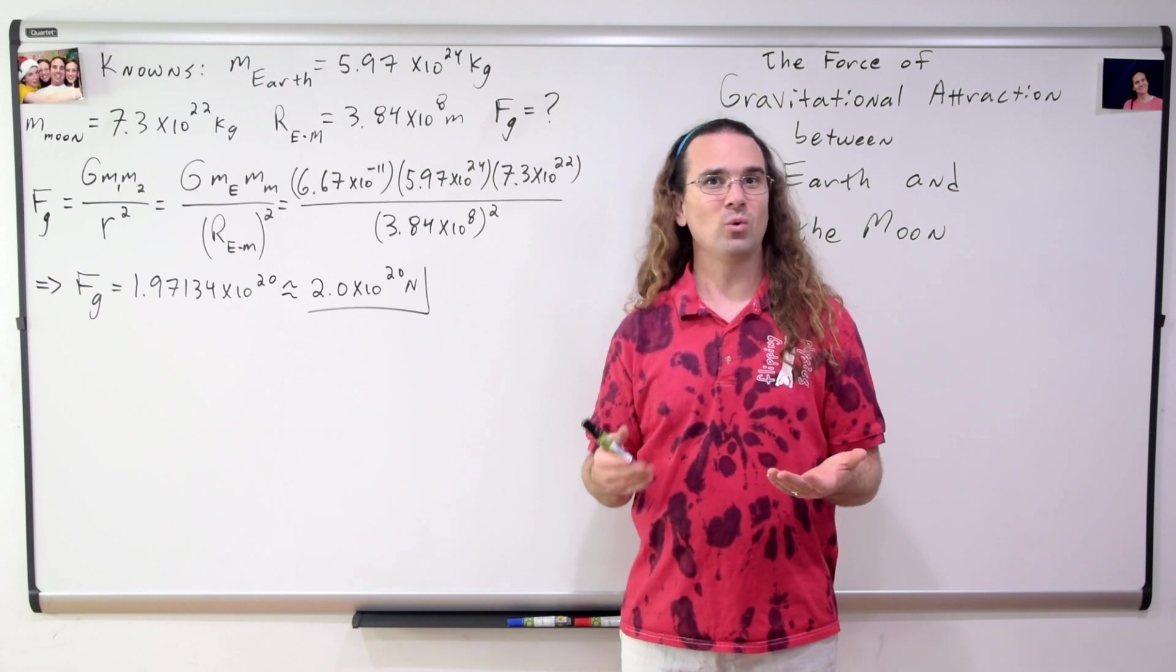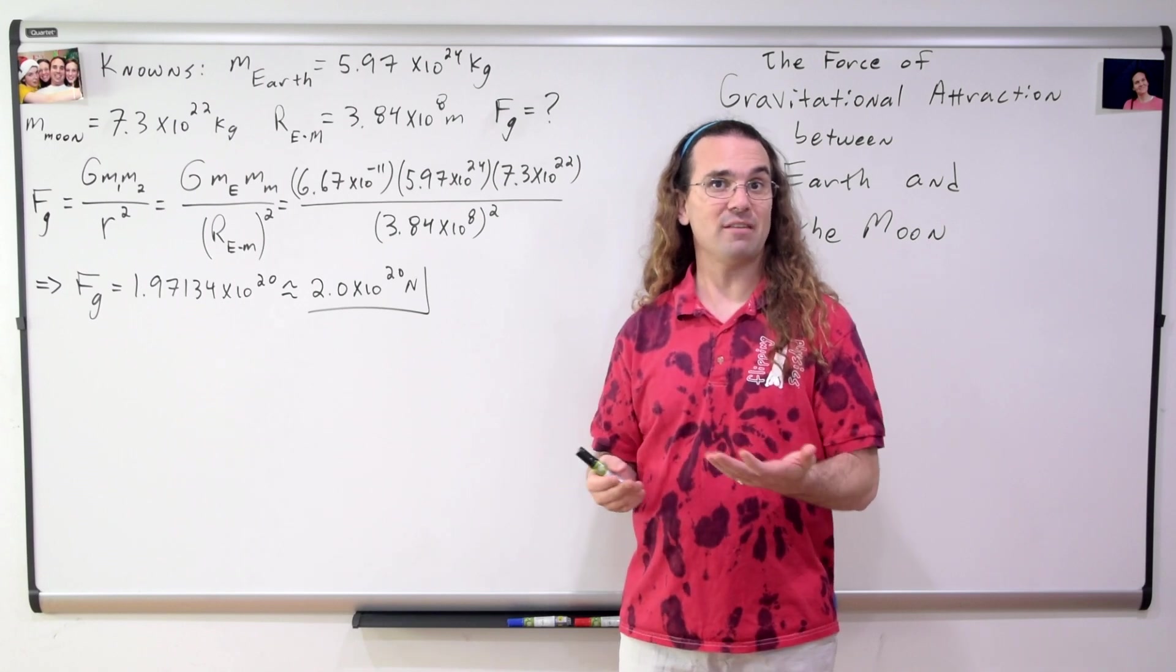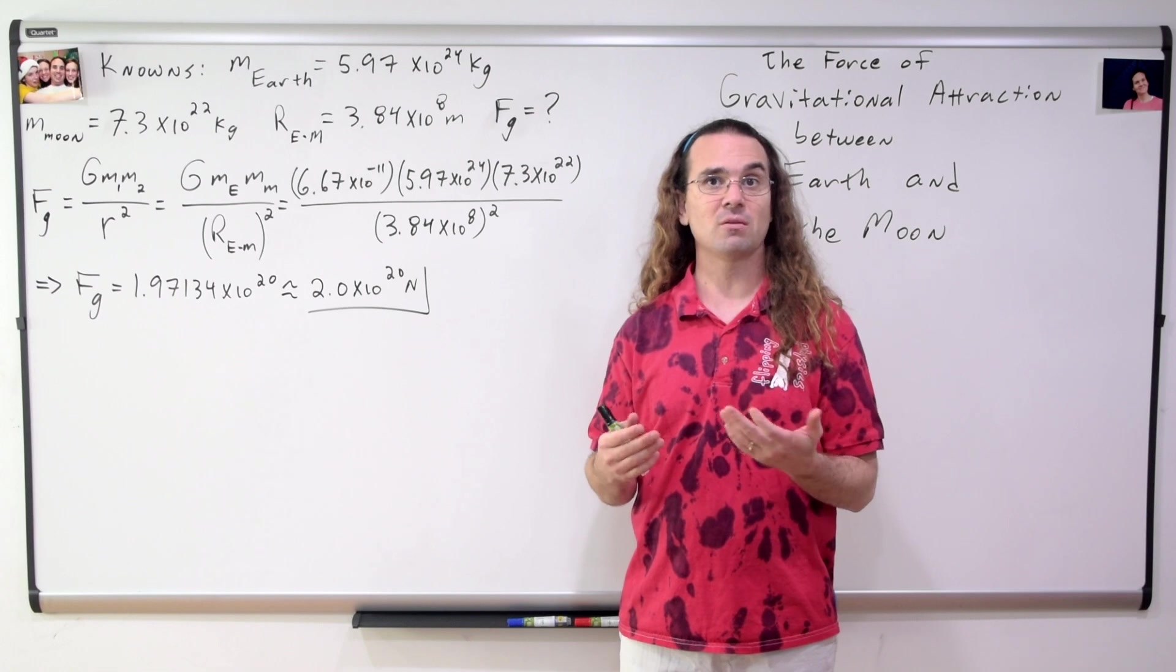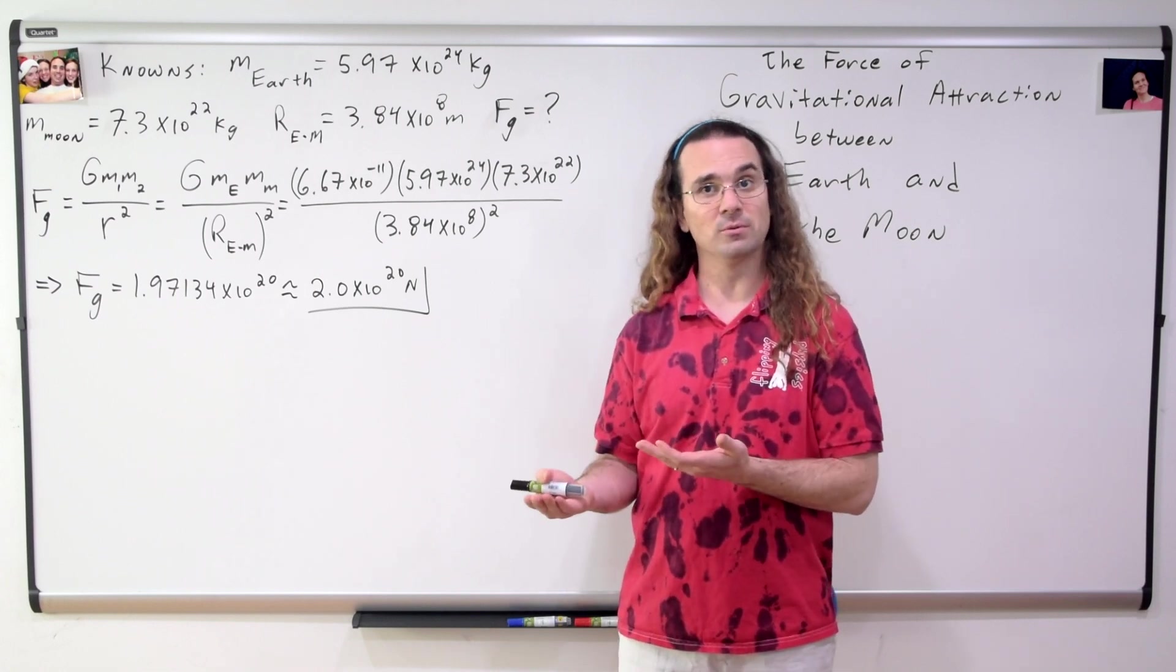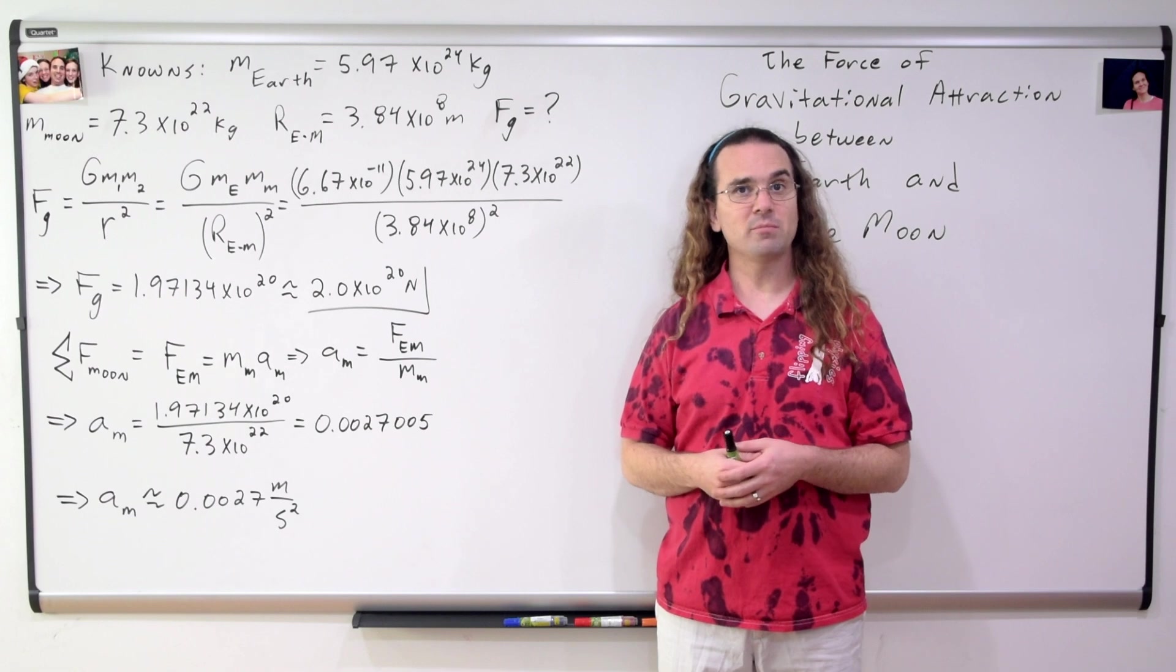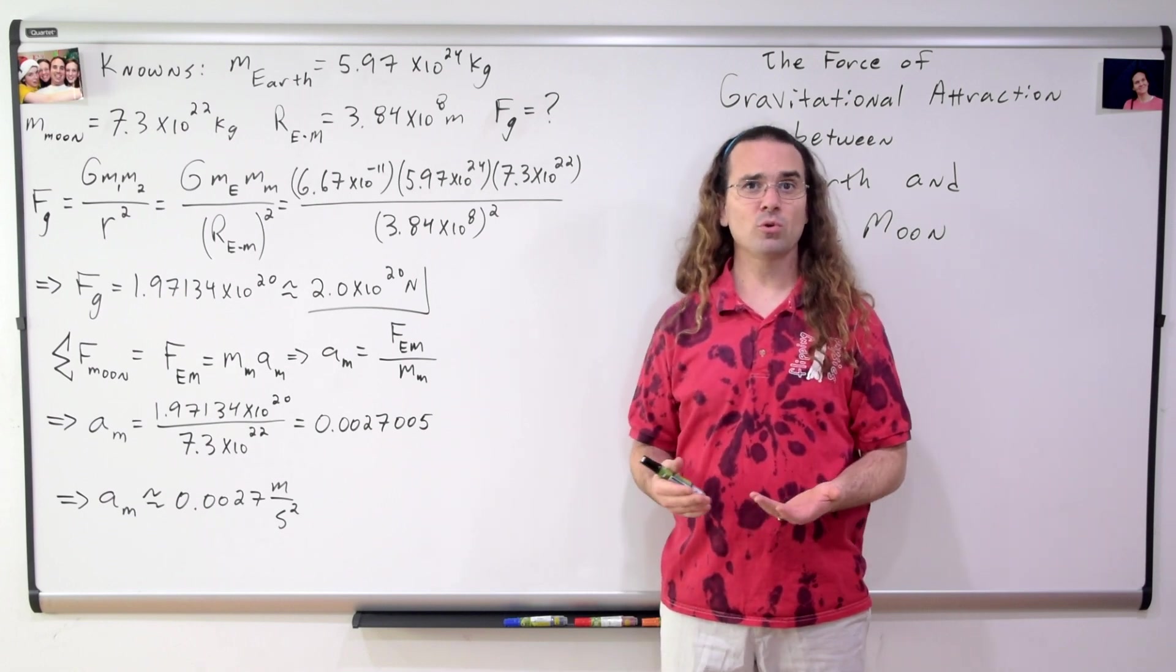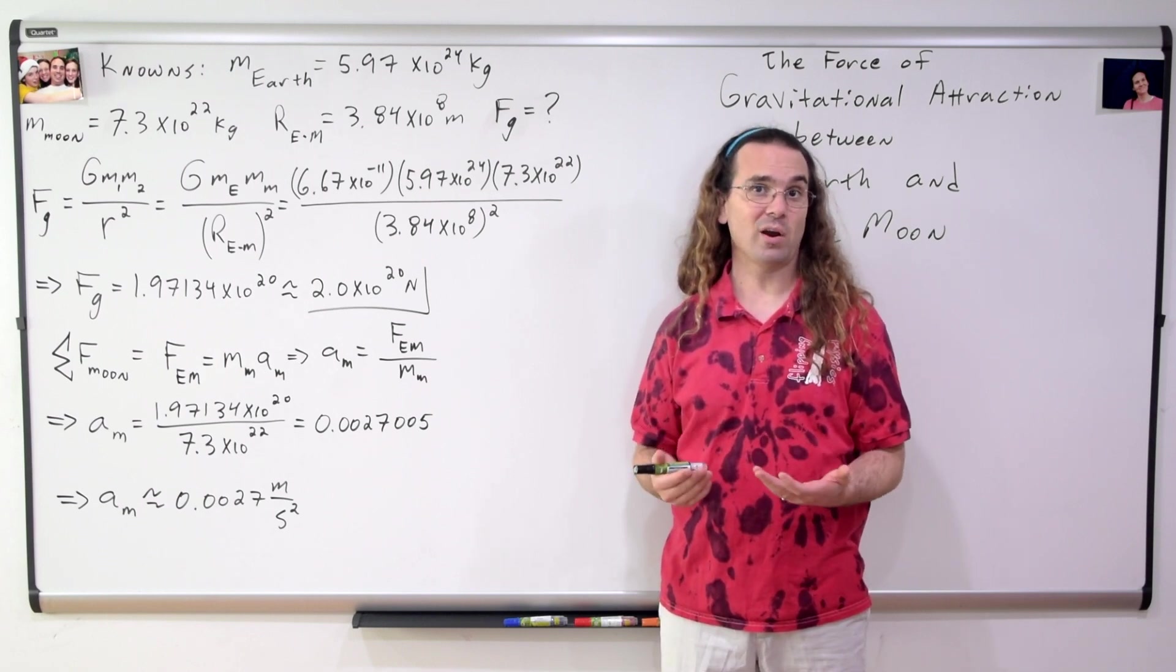Turns out, we can actually determine the acceleration of the Moon which is caused by the Earth. The net force acting on the Moon from the Earth equals the force the Earth exerts on the Moon, which equals the mass of the Moon times the acceleration of the Moon. Therefore, we can solve for the acceleration of the Moon. Plug in numbers, and get the acceleration of the Moon towards the Earth to be roughly 0.0027 meters per second squared.